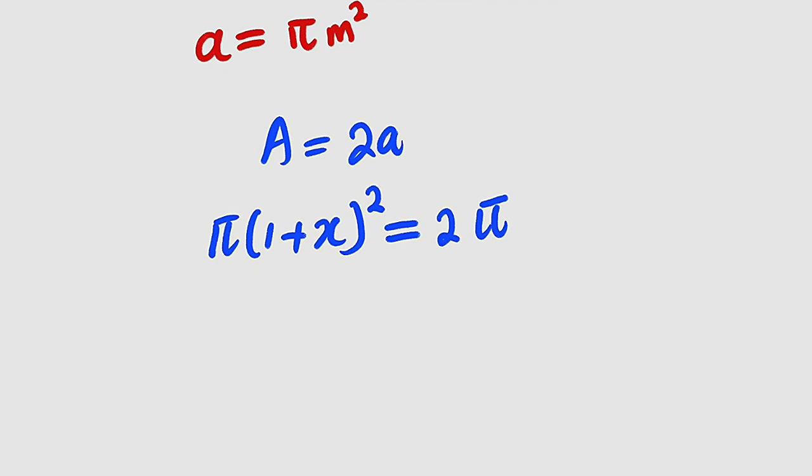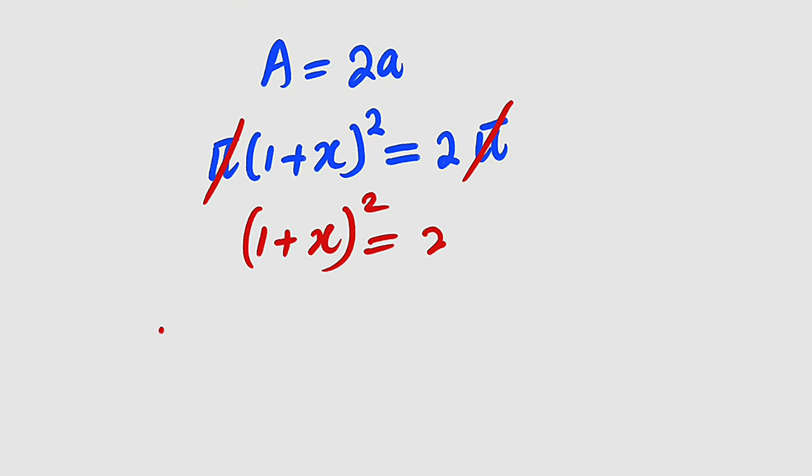So this is the equation we need to solve for x. Since we know that pi is non-zero, we can cancel it from both sides. All we have is 1 plus x squared equal to 2. Let us take the square root of both sides.